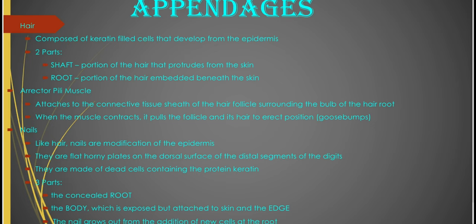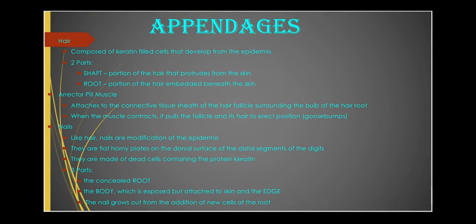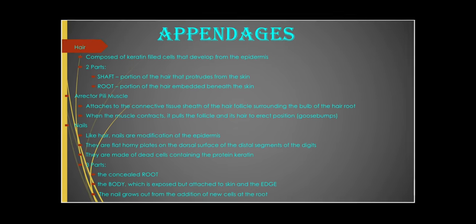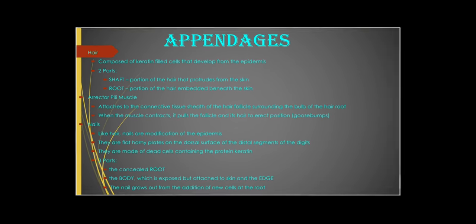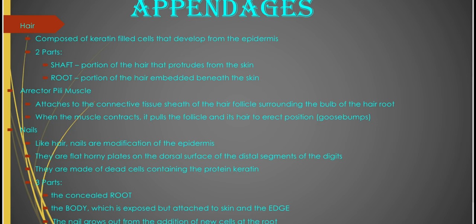Nails are also appendages. Like the hair, nails are modifications of the epidermis. They are flat horny plates on the dorsal surface of the distal segment of the digits. Nails are made up of dead cells containing the protein keratin. Each nail has three parts: the concealed root, the body which is exposed but attached to the skin, and the free edge. The nail grows out from the addition of new cells at the root.